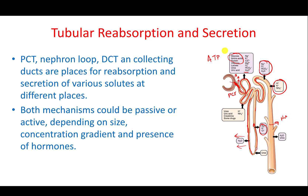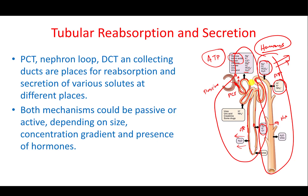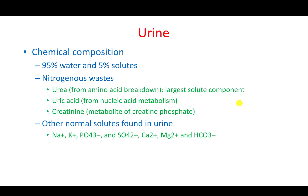The filtrate then enters the collecting duct, which is mainly about reabsorbing water. Some of these transport processes use ATP and some are passive. Notably, the distal convoluted tubule and collecting duct are under the influence of hormones, responding to systemic changes throughout the body, whereas the nephron loop and PCT respond to the local concentration environment. In the next video, we will talk about urine and generating concentrated or diluted urine.